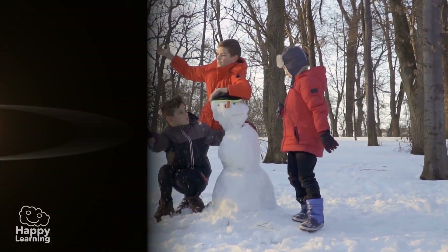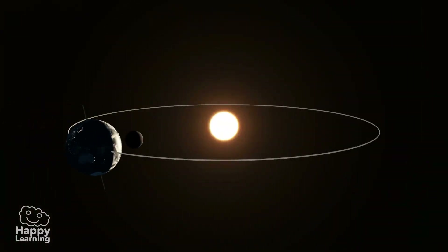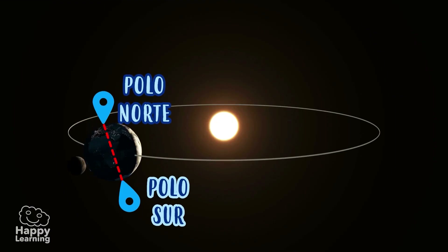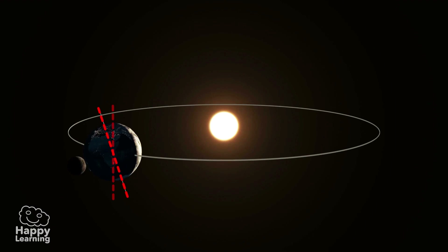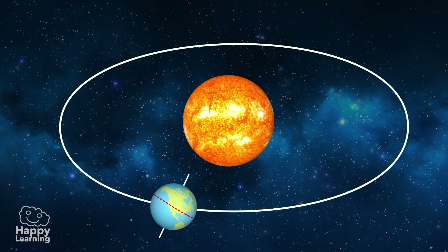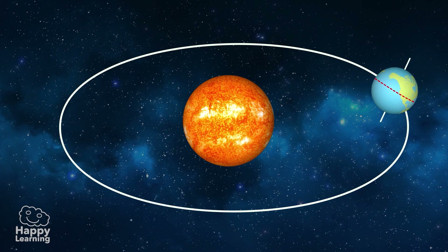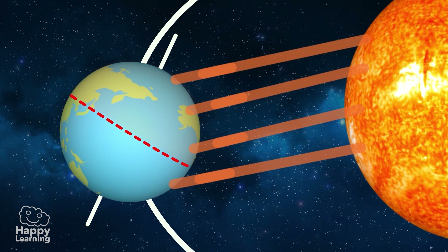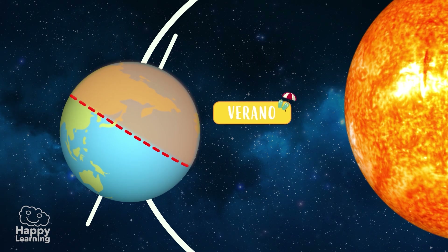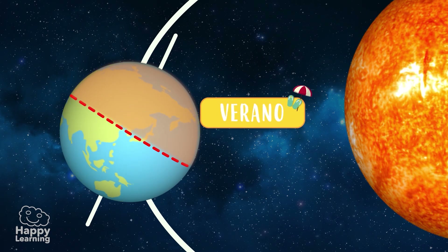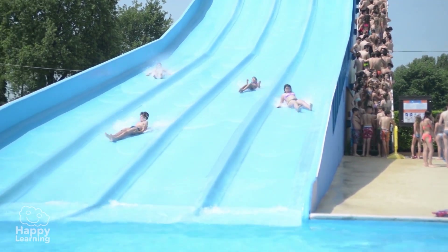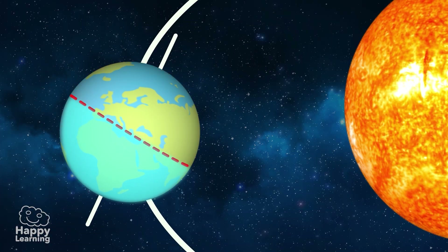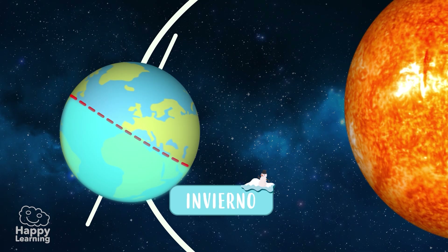Muy fácil: si observamos la Tierra, nos damos cuenta de que su eje — esa línea vertical imaginaria que la atraviesa de polo a polo — no está recta, está inclinada. Y eso hace que cuando la Tierra gira alrededor del sol, hay una parte que está más cerca de él y por lo tanto está más calentita, por eso ahí es verano — en este caso el hemisferio norte. Mientras tanto, la otra mitad, el hemisferio sur, está más fría, por lo que ahí es invierno.